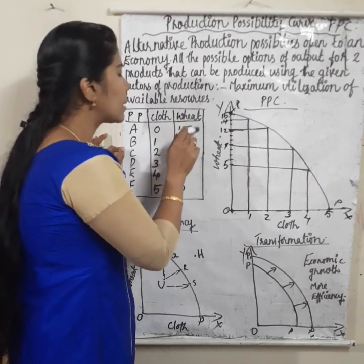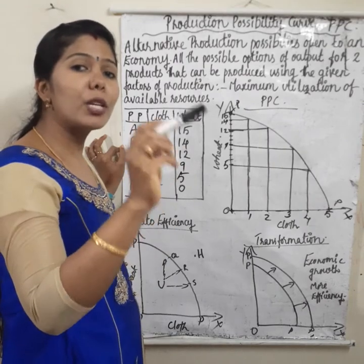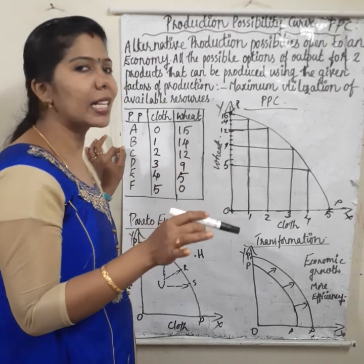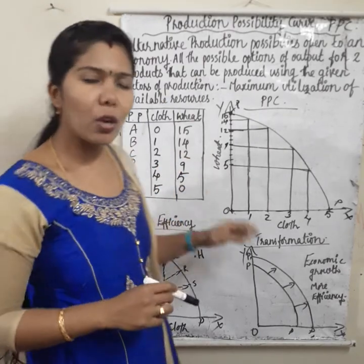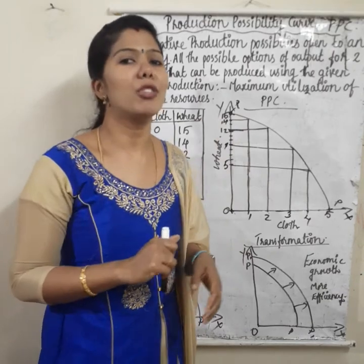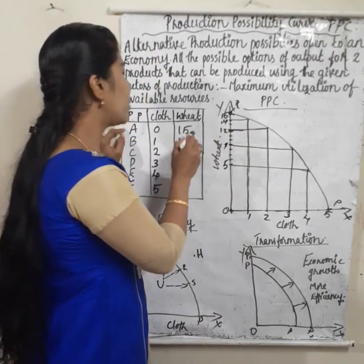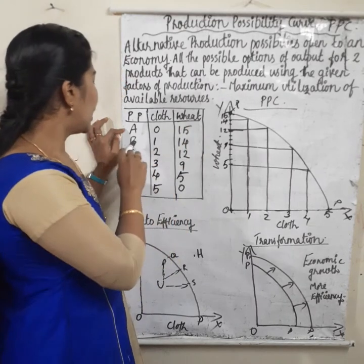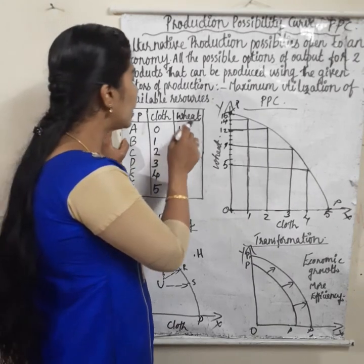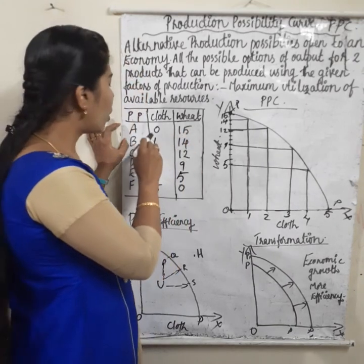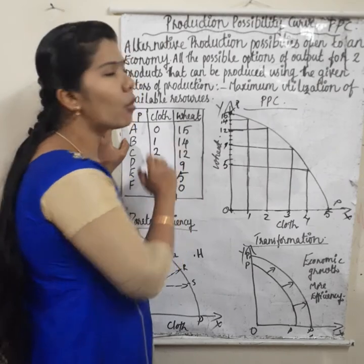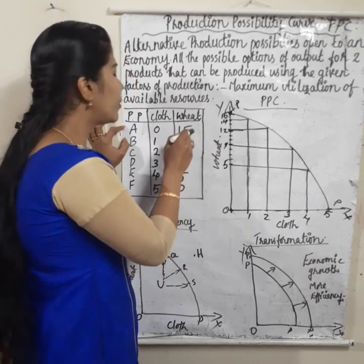So the production of wheat is maximum. In order to produce one commodity at maximum, another commodity will be at minimum or zero. Because in order to produce one commodity in more units, we have to sacrifice the production of another commodity. So cloth is 0 and wheat is 15 — maximum wheat. In possibility B, 1 unit of cloth is produced and 14 units of wheat. So in order to produce 1 unit of cloth, that economy sacrificed 1 unit of wheat — cut from 15 to 14.